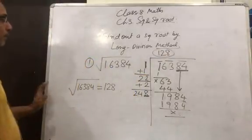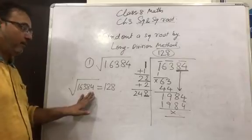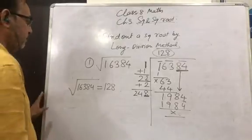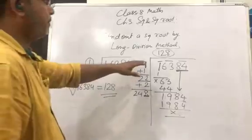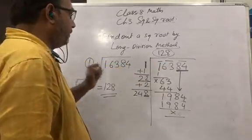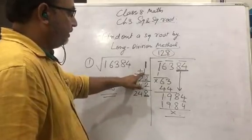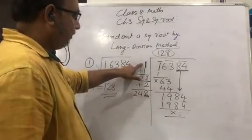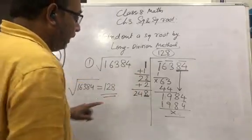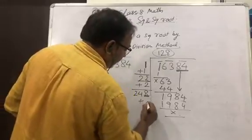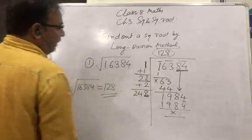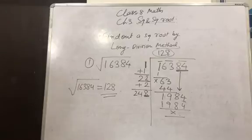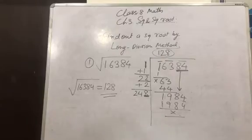So, √16384 = 128. This is the square root of 16384, which equals 128. Two things are very important in this method: one, you must make the bar from right to left; and second, you add the same unit digit number to build the next divisor — for example, if it is 1 you add 1, if it is 2 you add 2, and so on.